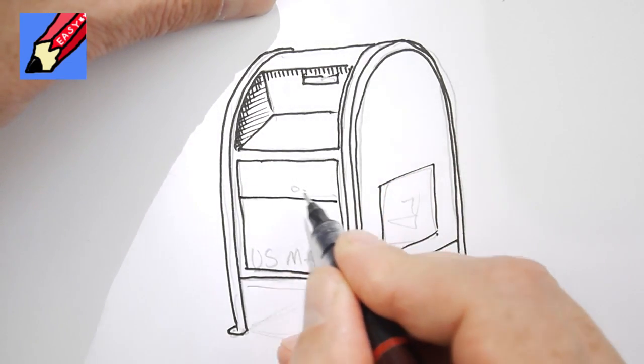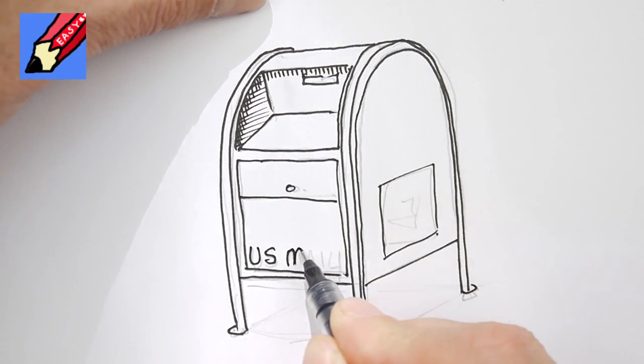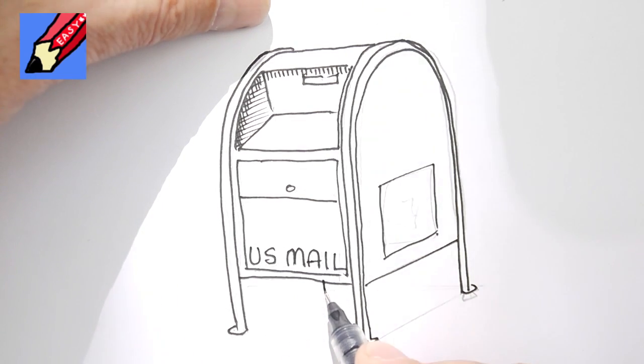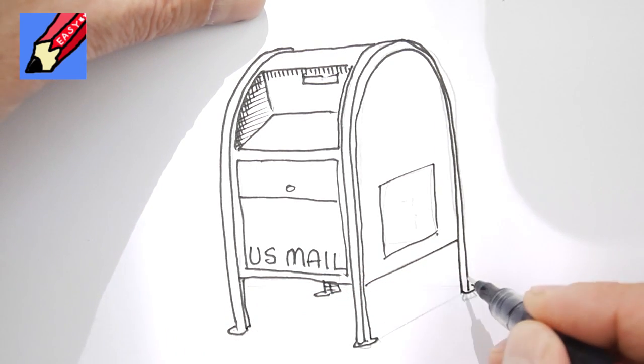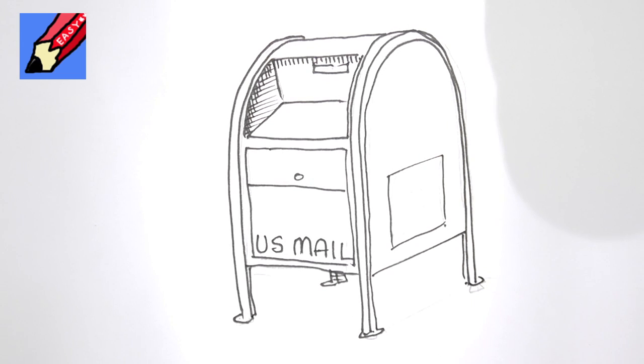And draw that there, a line across, that's the key, US Mail there. And you're also going to just see that one on the other side there and you might see a little hint of... there we go. How to draw a US mailbox.